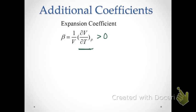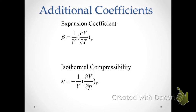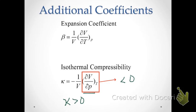There's another coefficient called the isothermal compressibility, represented by the Greek character kappa. It is related to the partial derivative representing changes in volume when we change pressure under isothermal conditions. Increasing pressure decreases volume, so that partial derivative is less than zero. The negative sign in the definition ensures that kappa is always greater than zero. Tabulated values can be found in thermodynamic tables or your textbook.